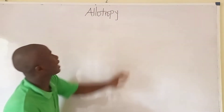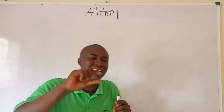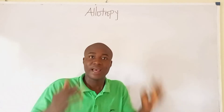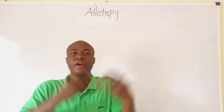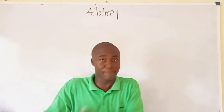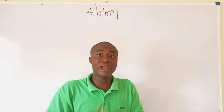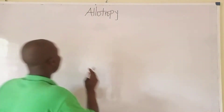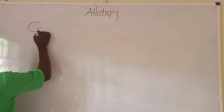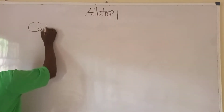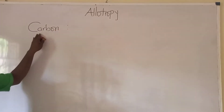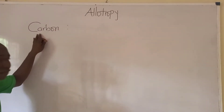Allotropy is seen in elements. We have various elements and their allotropic forms. Let's quickly talk about that — like the likes of carbon. Carbon is an element, so what are the allotropes of carbon?